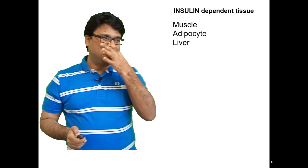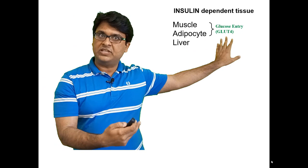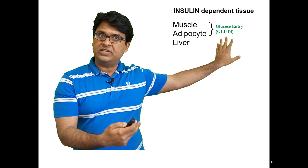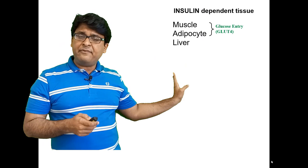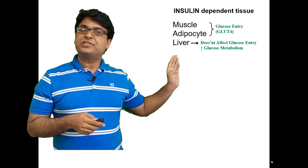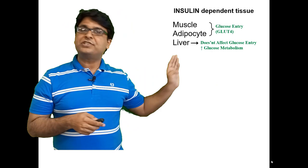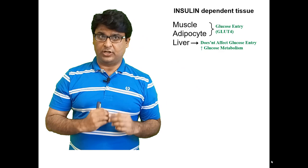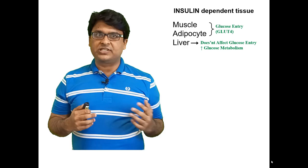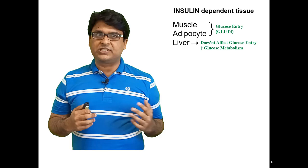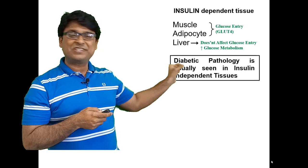Insulin primarily controls glucose entry in adipocytes and muscle cells via GLUT4, and increases metabolism in the liver via GLUT2. However, the tissues damaged in diabetes are not the insulin-dependent ones — they are insulin-independent tissues like renal vasculature, kidney parenchyma, and arterioles. Diabetic pathology is usually seen in insulin-independent tissues, not insulin-dependent ones.